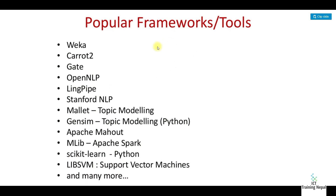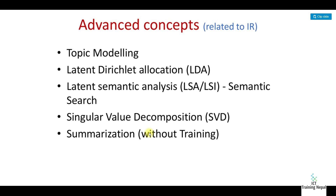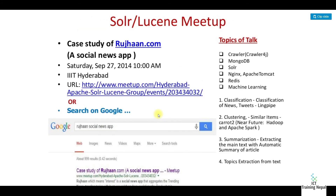For example, Amazon book recommendations are a popular use case. Popular frameworks and tools include Carrot2, Gate, OpenNLP, LingPipe, Stanford NLP, Mallet for topic modeling, and Apache. Skills to learn include Python. Advanced concepts include topic modeling, Latent Dirichlet Allocation, Latent Semantic Analysis, Singular Value Decomposition, and summarization.